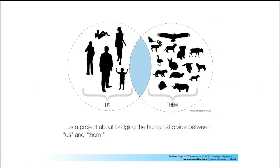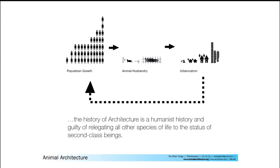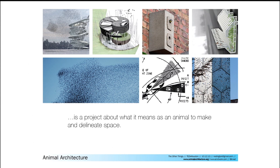More broadly, animal architecture is a project about bridging the humanist divide between us and them. It's about getting us out of thinking that we're not animals, when in fact we definitely are. It is also a project about interrupting this historical pattern of human subjugation, where we're relegating all these other animals and species to a secondary class of beings. It's also about recognizing that animals already come with innate patterns and methods for designing and interacting with their own spaces — swarms of birds, the migratory path of a cow — and that designers can use these to engage in a discussion with another animal.